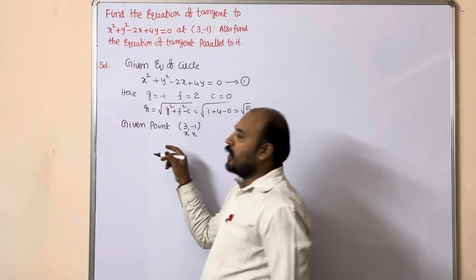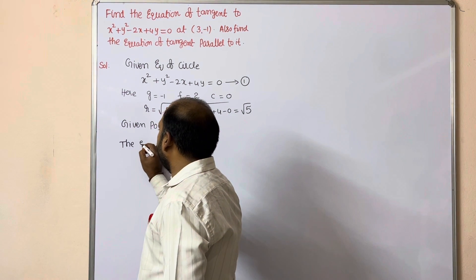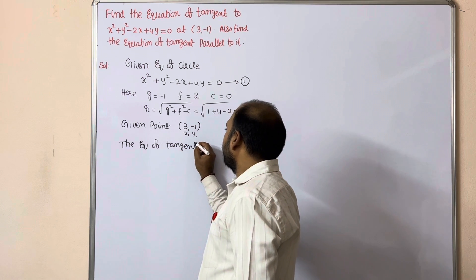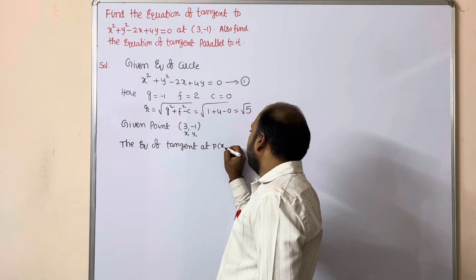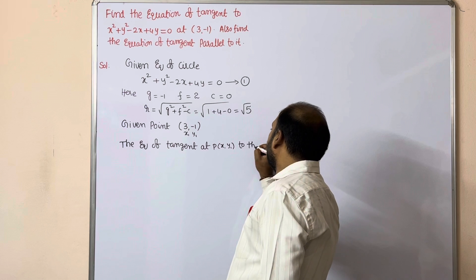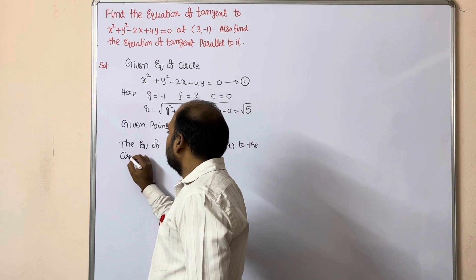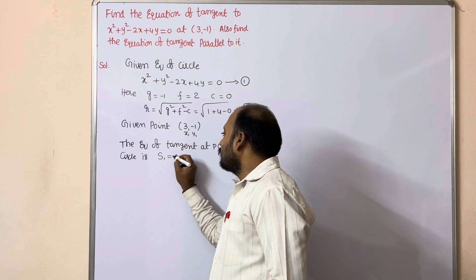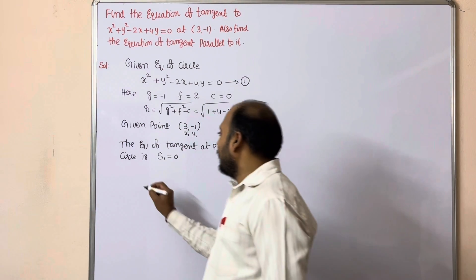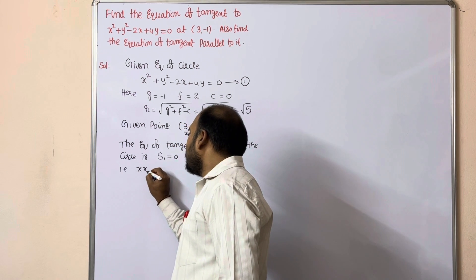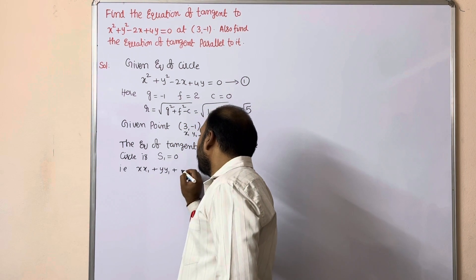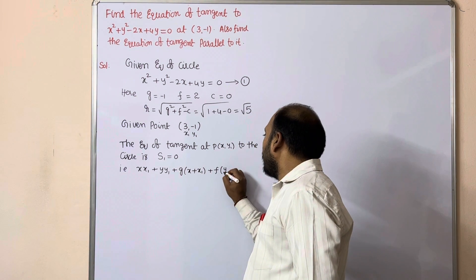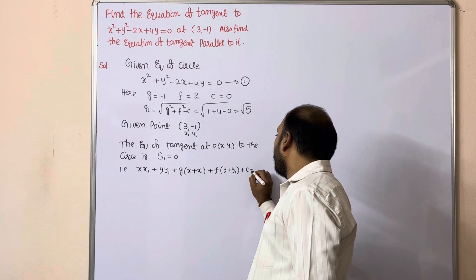The equation of tangent at point P(x₁, y₁) to the circle is s₁ = 0. The formula for s₁ is: xx₁ + yy₁ + g(x + x₁) + f(y + y₁) + c = 0.